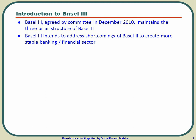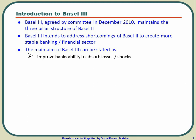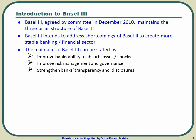BASEL 3 intended to address shortcomings of BASEL 2 to create more stable banking and financial sectors. The main goals of BASEL 3 can be stated as: first, improve the bank's ability to absorb losses and shocks; second, to improve risk management and governance; and third, to strengthen bank's transparency and disclosure. These were the main issues in BASEL 2 that created instability in the financial sector, and BASEL 3 aimed to address all three.